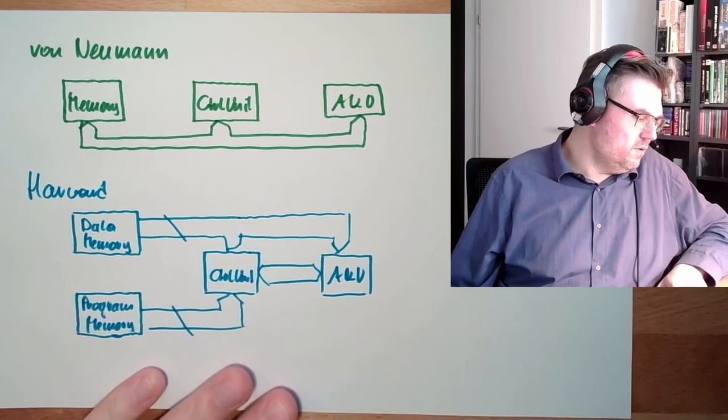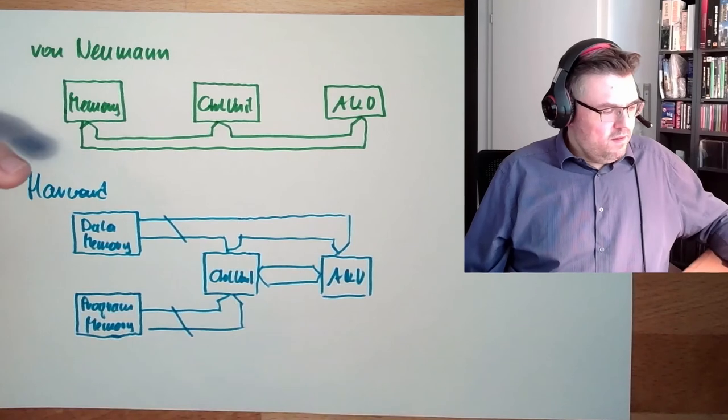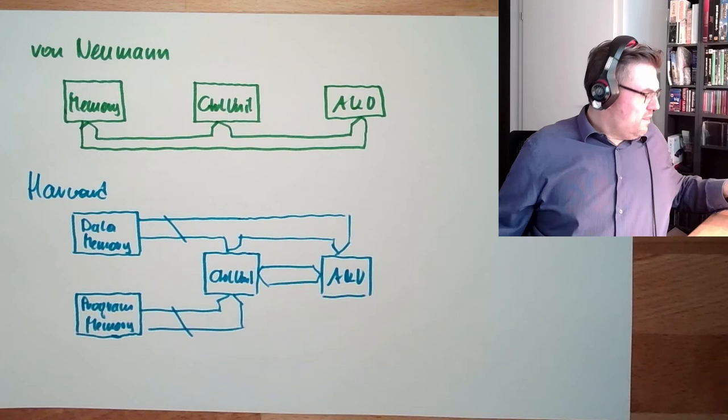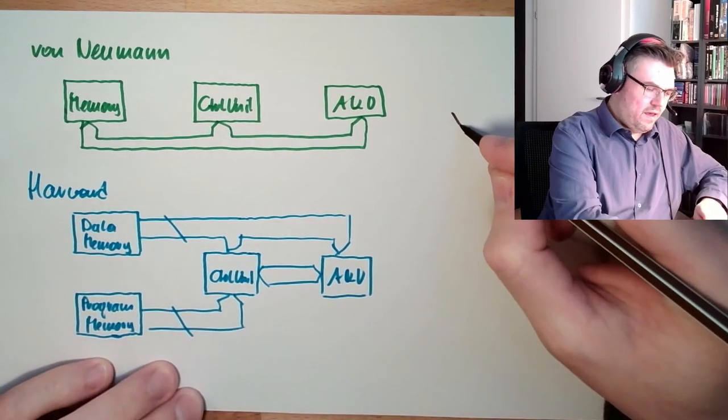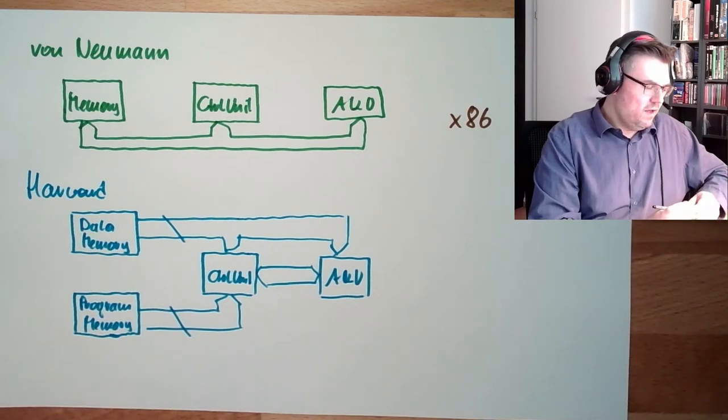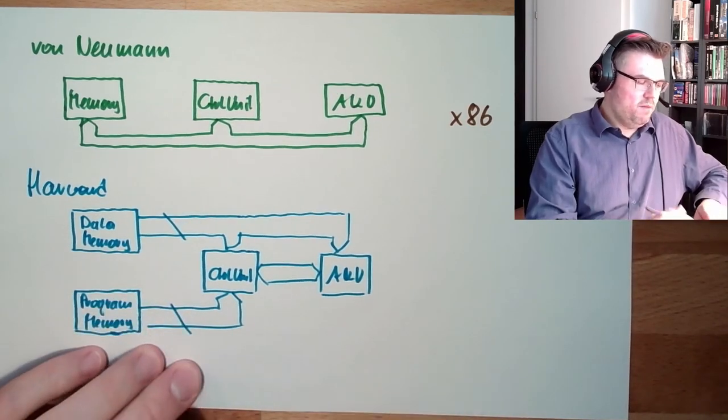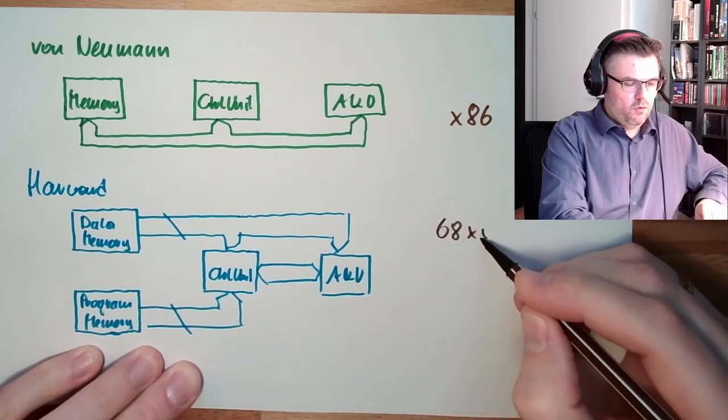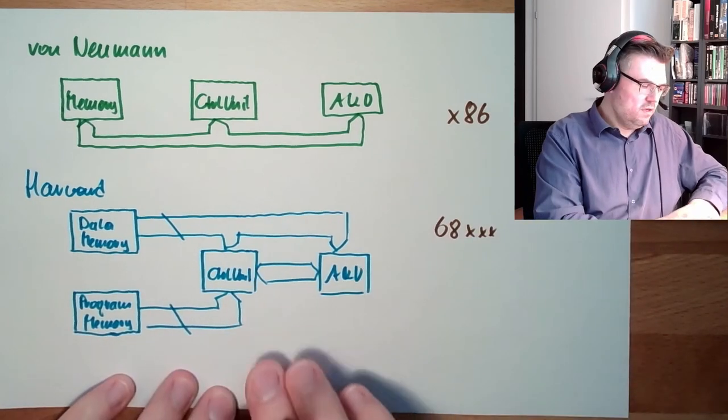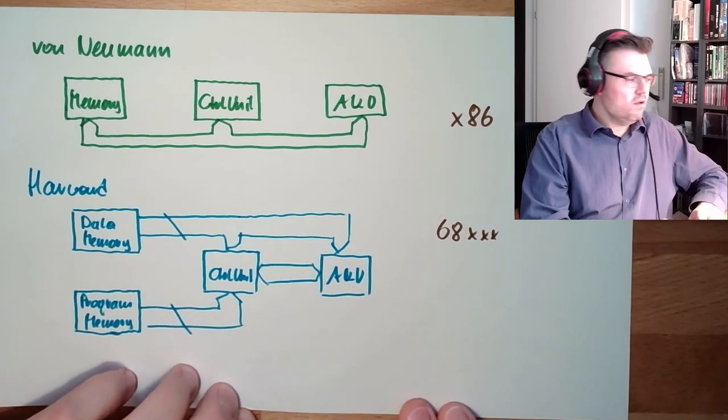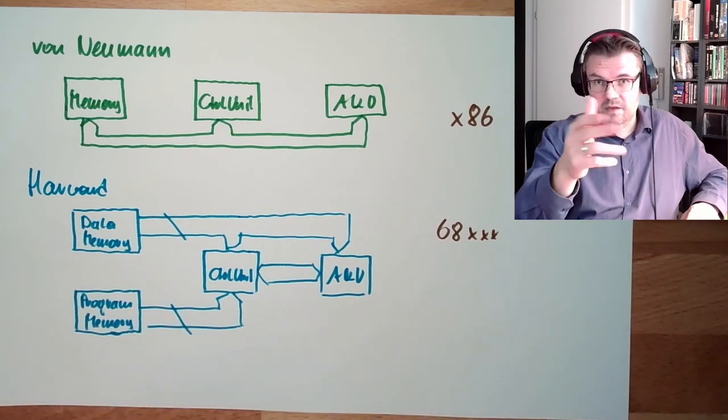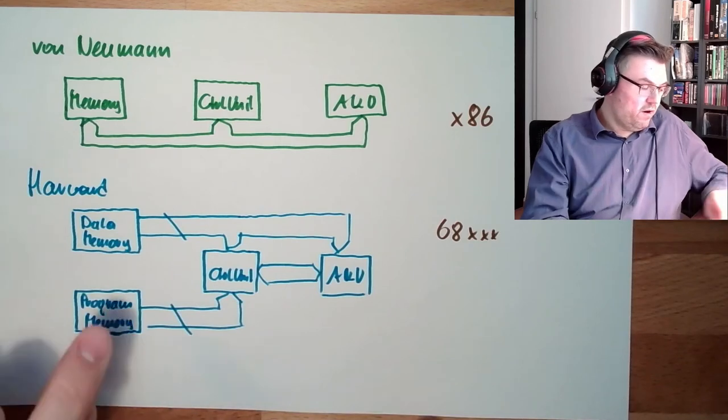This is how modern computers are working. This is usually - the Intel x86 architecture is a Von Neumann architecture, and here an example was the 68000 of Motorola. The 68000 processor family, this was a Harvard architecture. Also many small controllers like the Arduino, for instance - the mega chips and so on - they are Harvard architecture.